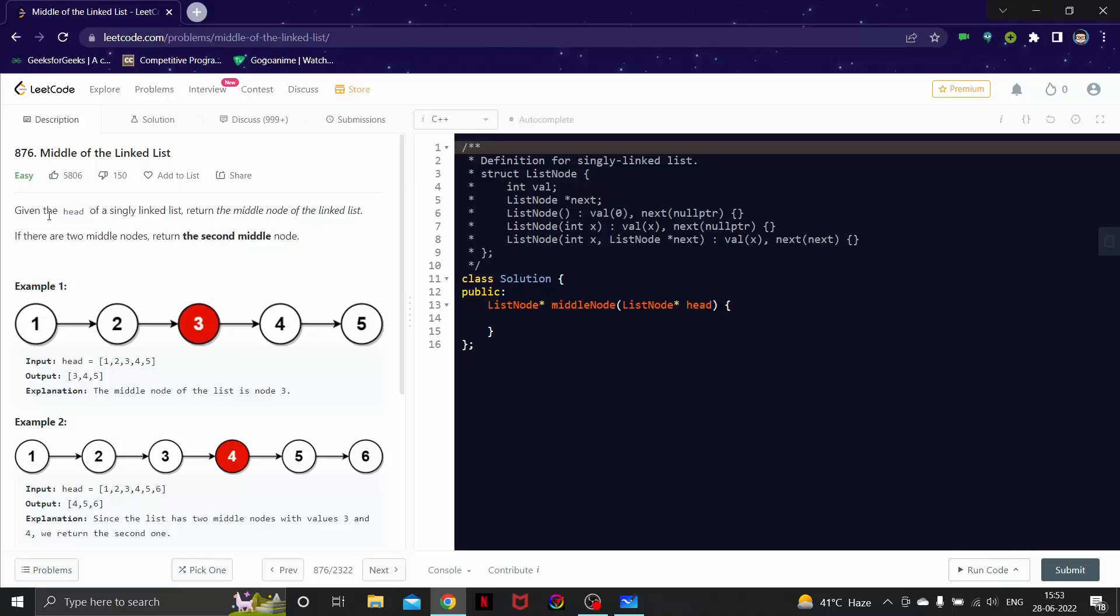Let's first read the question description. Given the head of a singly linked list, return the middle node of the linked list. If there are two middle nodes, return the second middle node.